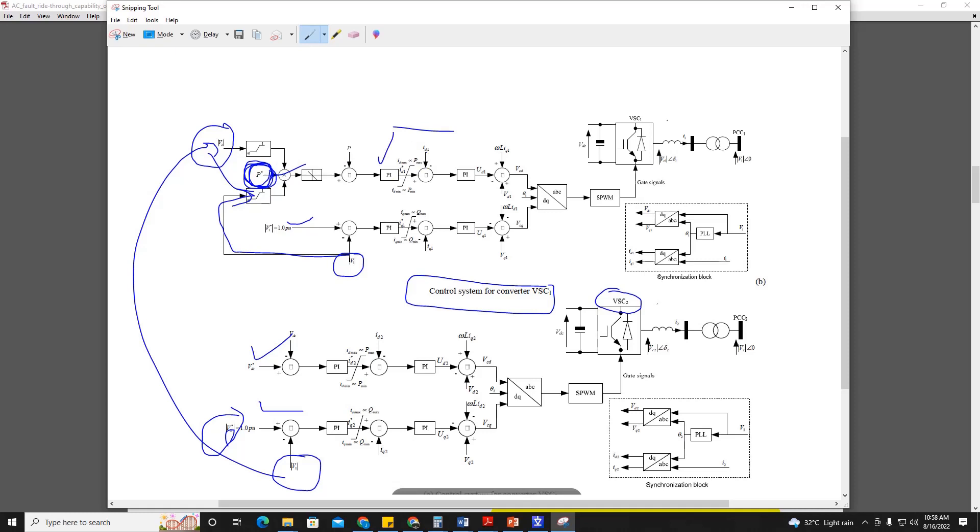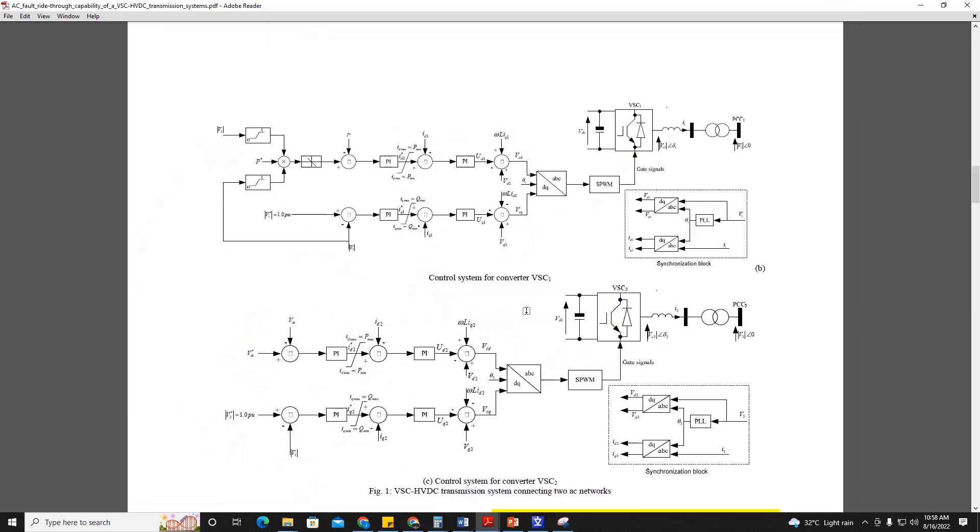So this is a PI controller used. As we know, the active power is adjusted by changing the D current component Id max. You can refer to details of the control in our previous videos. This is the inner current control. We have already defined inner current control in our previous videos. Then DQ to ABC transformation is happening. Then this SPWM technique is used given to the switches. Similarly here DC voltage control is performed. Then this is the inner current control. Similarly, DQ to ABC and then switching signals are given.